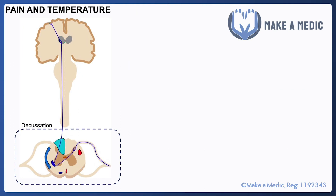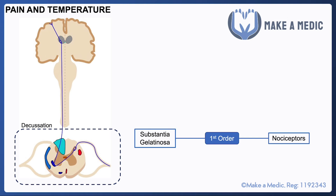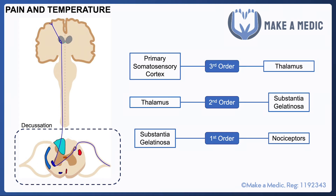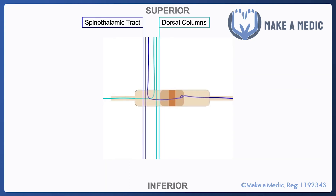From the thalamus, a third order neuron carries that information up to the primary somatosensory cortex. The pain and temperature pathway is quite different. It begins with nociceptors - specialized receptors for pain found within the skin and various other tissues. The first order neuron travels to the substantia gelatinosa within the gray matter of the spinal cord, and at that level it synapses with a second order neuron which immediately crosses the midline and ascends up the spinothalamic tract to the thalamus. The important point is that the spinothalamic tract crosses the midline at the level at which the neurons enter the spinal cord. From the thalamus, the third order neuron transmits that information to the primary somatosensory cortex.